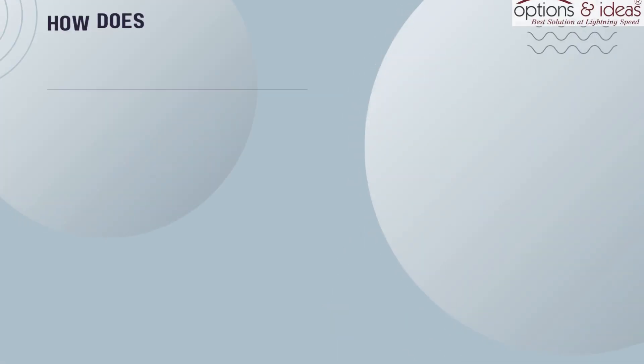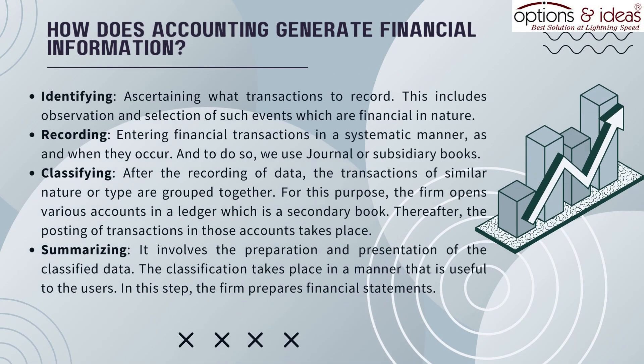How does accounting generate financial information? Step 1: Identifying — ascertaining what transactions to record. This includes observation and selection of such events which are financial in nature. Step 2: Recording — entering financial transactions in a systematic manner as and when they occur. To do so, we use a journal or subsidiary books.